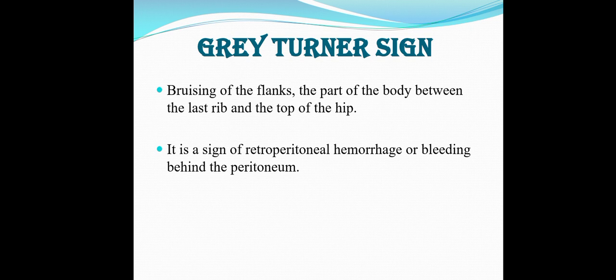So what is the flank? The flank is the side part of the human body — specifically the part of the body between the last rib and the top of the hip. The Grey Turner sign is mainly caused by retroperitoneal hemorrhage, or bleeding behind the peritoneum.